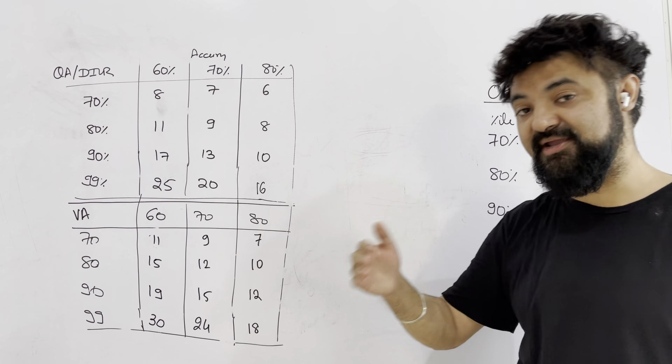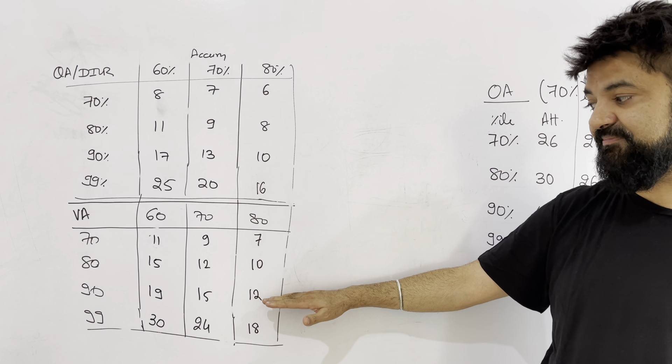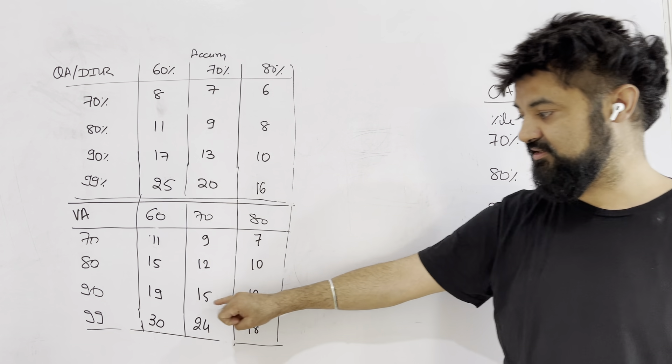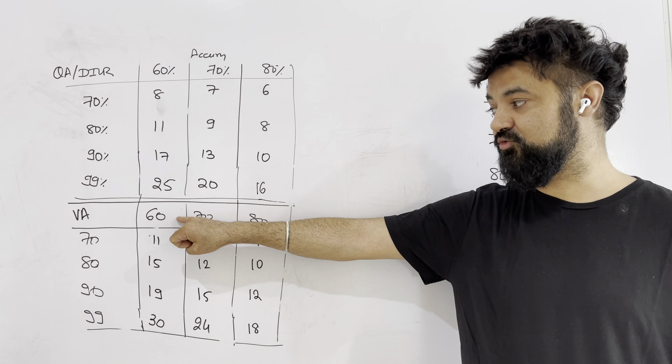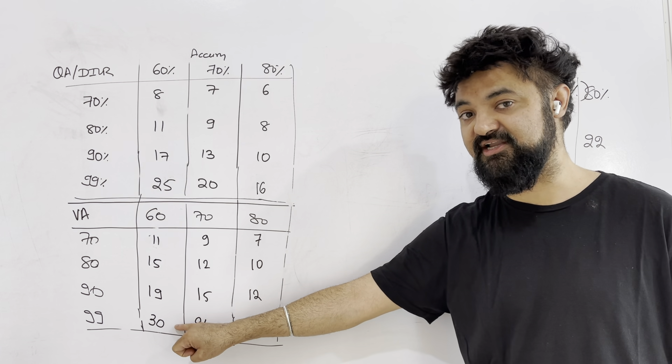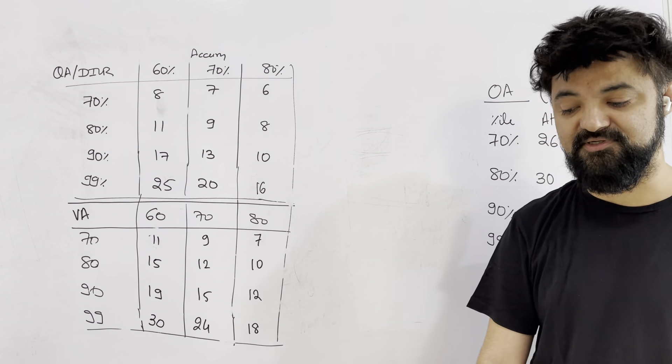So section wise for the main IIMs also, you need minimum 90 percentile. So this number. So even if accuracy in verbal is very low, 60 percent, so probably 20-25 attempt is a good attempt to touch your percentile.